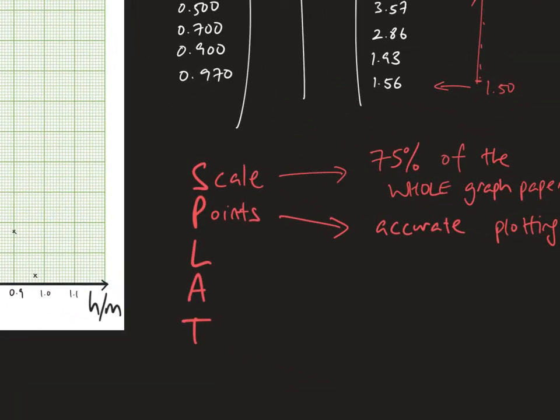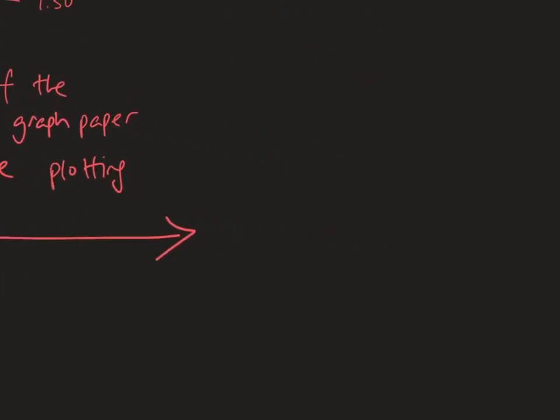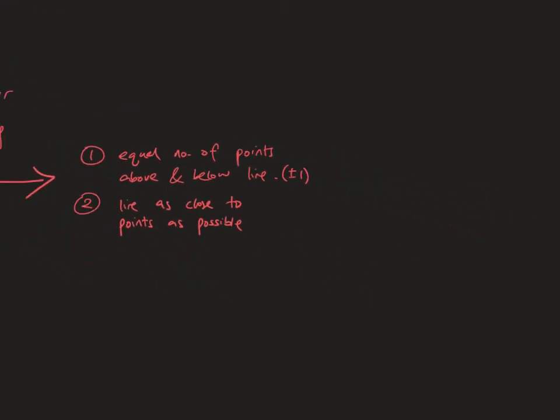Now, the next thing that we're going to look at is line. We're looking for a best fit line. And how do we draw a best fit line? Let me elaborate for a best fit line. We basically want to have two things. Number one, you want to have equal number of points above and below line. Okay? But you can have maybe plus minus one. But not more than that. So if you have three points below, three points on top, or two points, or four points.